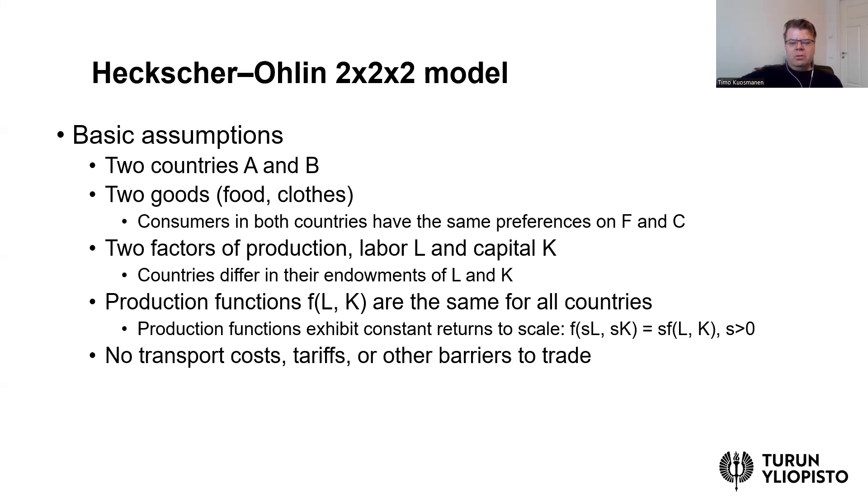And let's suppose also that production functions, so in some sense production technologies, are the same for both countries. So both countries have the same production function, F(L, K). And we also assume that production functions exhibit constant returns to scale. So if you increase both labor and capital by some factor s, then output increases also by factor s. And finally, in the model we don't have any transport costs or tariffs or other barriers to trade. So there is frictionless trade between these two countries, at least in principle.